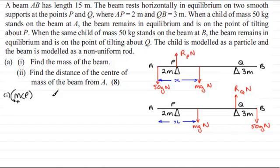it's going to want to turn the beam round like this in an anti-clockwise sense. So it's going to be positive. 50G would be the force and the distance to P is 2. So that's the moment about that P for the weight of the child.